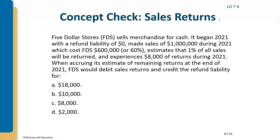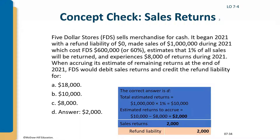Practice example: FDS had sales of $1 million in 2021 costing $600,000, estimates 1% of all sales will be returned, and already had $8,000 of returns during 2021. Total expected returns are 1% × $1,000,000 = $10,000. Since $8,000 has already been returned, the remaining accrual needed is $2,000: debit sales returns and allowances $2,000, credit refund liability $2,000.